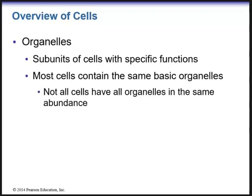We have structures within the cells called organelles. Organelles are subunits of cells that have specific functions, and most cells do contain the same basic organelles. However, not all cells have all organelles in the same abundance. For example, mitochondria is an organelle responsible for ATP production. ATP is needed for energy, and skeletal muscle cells that move will have more mitochondria so they can have more ATP for movement.